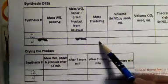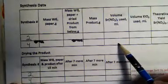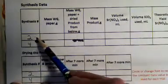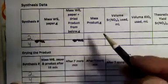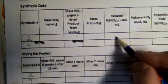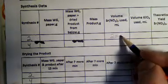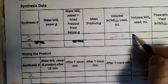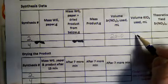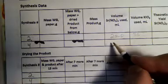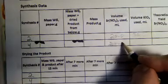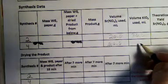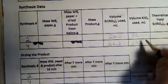Now we have the mass of the product, the volume of strontium nitrate used, and the volume of potassium iodate used. Those volumes are in a chart listing each synthesis. For synthesis two: strontium nitrate is 20 milliliters and potassium iodate is 30 milliliters. For synthesis four: strontium nitrate is 20 milliliters and potassium iodate is 60 milliliters.